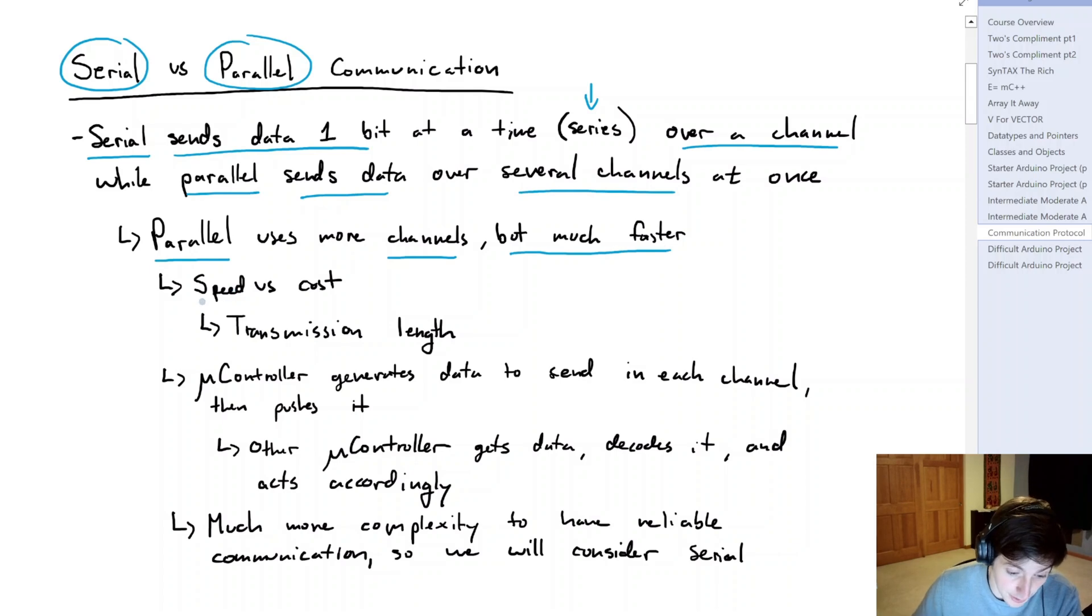So something you may need to consider is the speed versus cost. If you need more channels, you probably will have a more expensive system. And another thing we need to consider if we use this parallel option for communication is the transmission length. We need to minimize the propagation delay that we may have in that data line, and as we get to extreme lengths, those propagation delays add up.